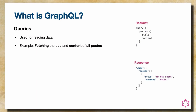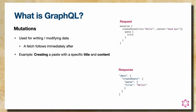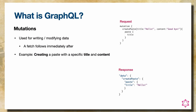If you want to change data — delete or create something — you use an operation called mutation. Mutation is used to alter information on a web application. On the right side, we have an example of creating a new paste. The create paste operation has two parameters: title and content. The response reflects that exact paste we just created.